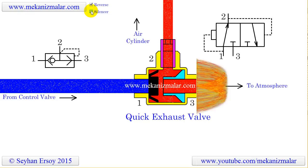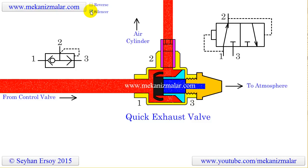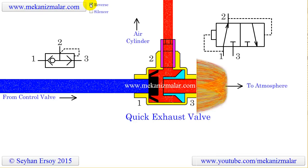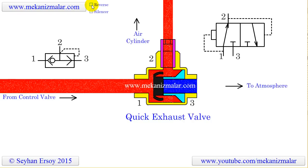If we want slow forward and very rapid return speed for the piston, one way to accomplish this is by using a very large control valve along with a speed control valve to regulate the forward speed. However, by using a quick exhaust valve, we can accomplish the same task with a small control valve.